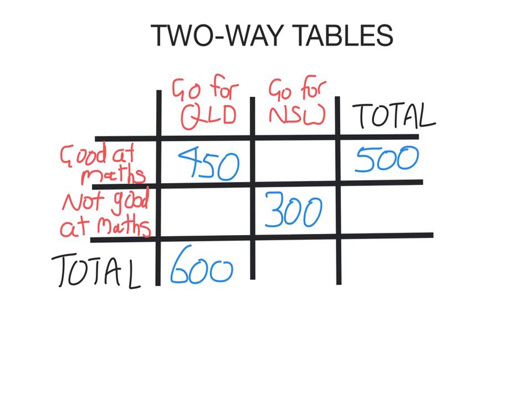So this is the kind of thing you might get — we have a table here. It's just a made-up survey of students, and there are two stages to this. One, whether they go for New South Wales or Queensland, and that's displayed on the top along here. And then the other stage is whether they're good at maths or not good at maths, and that's displayed down the side.